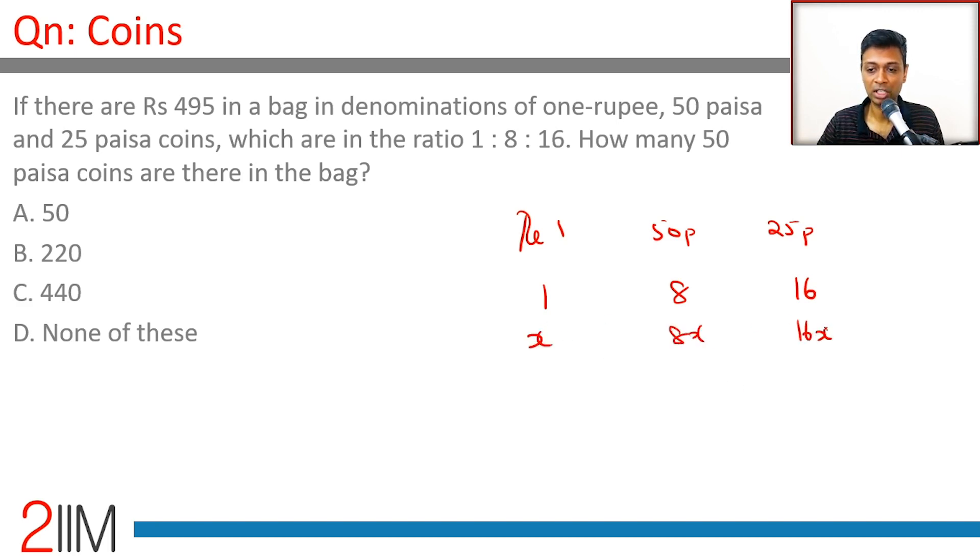The amount of money would be x, 8x into 1/2, and 16x into 1/4. 50p is half a rupee.